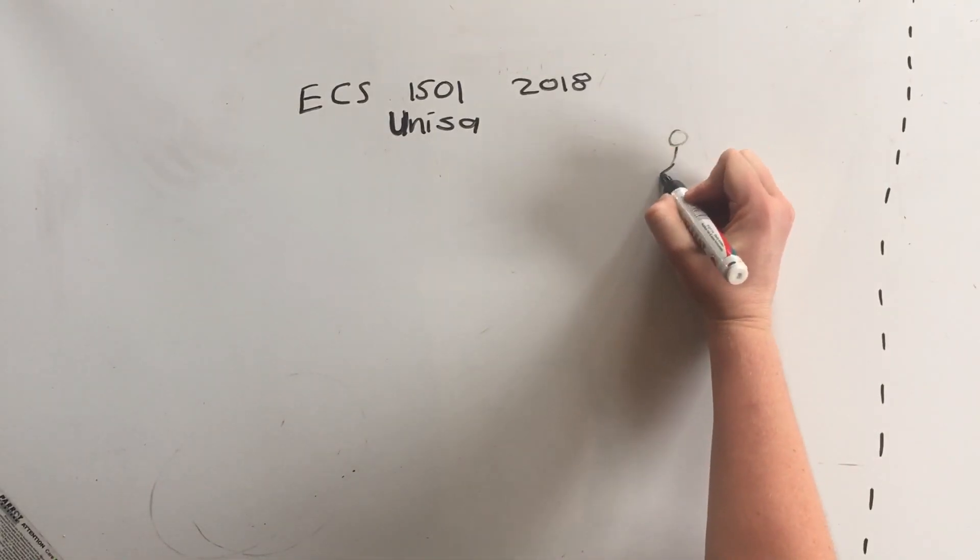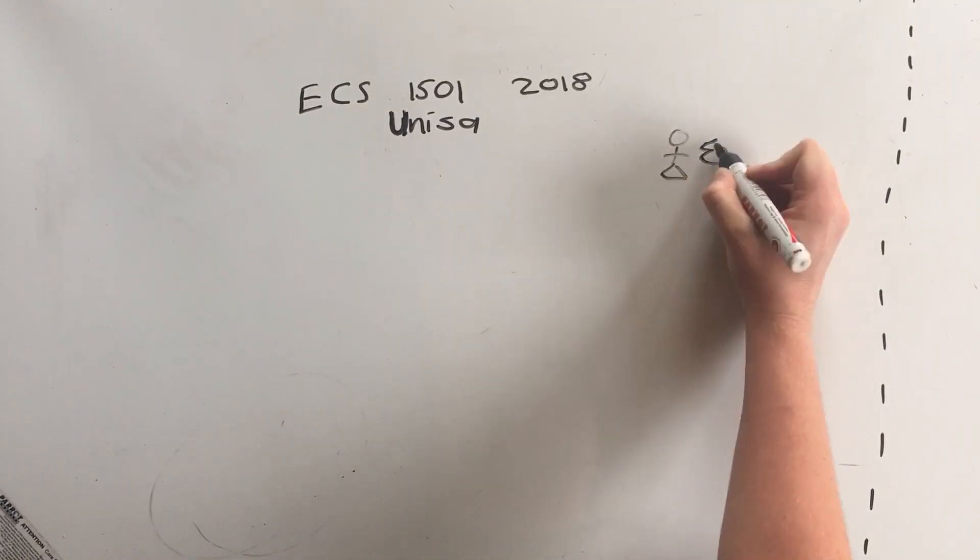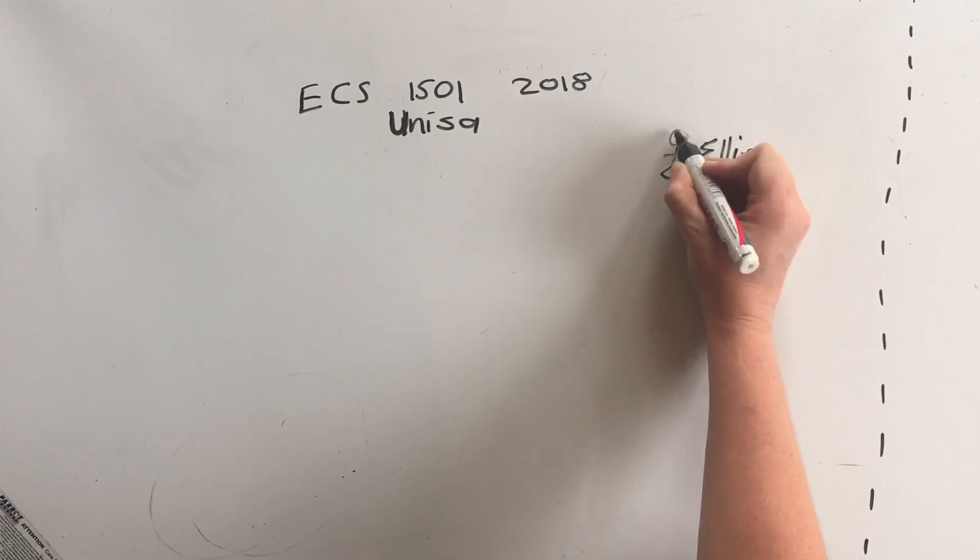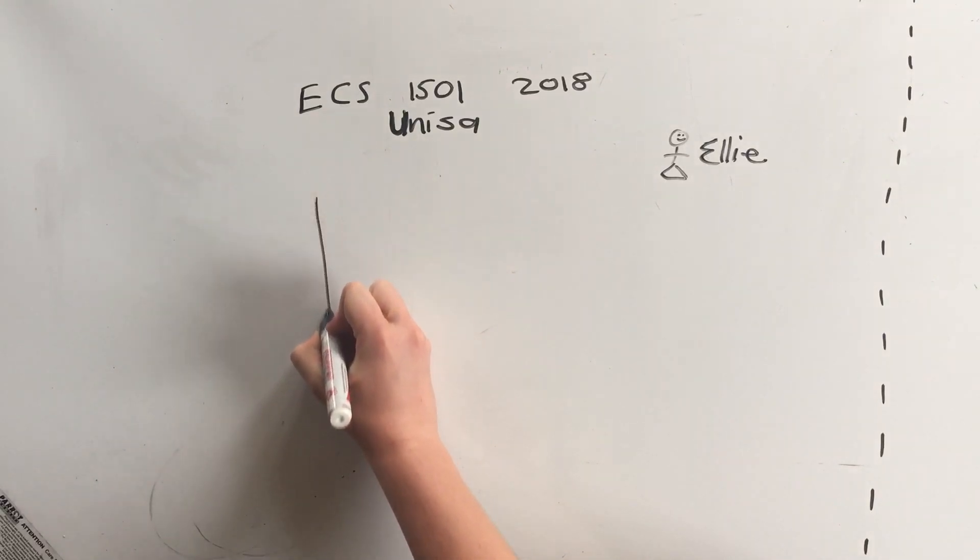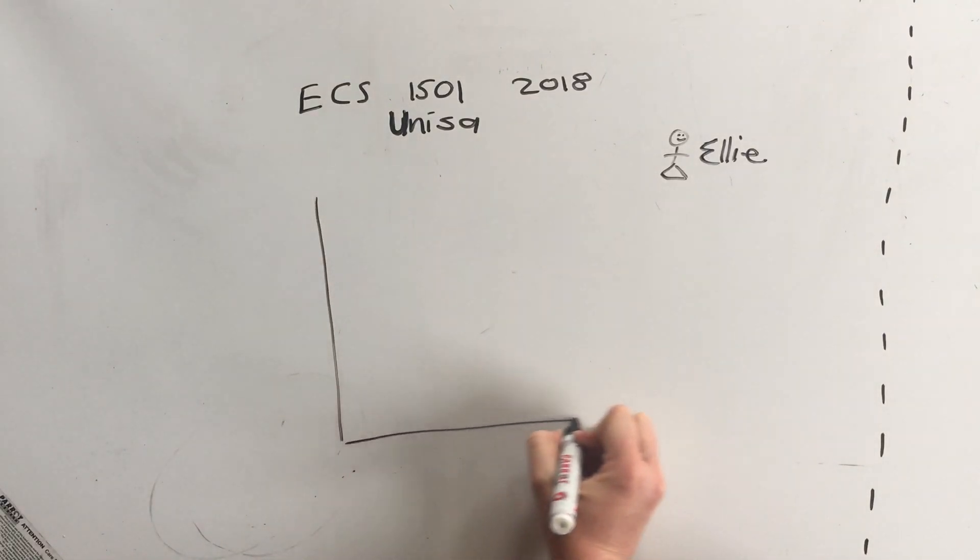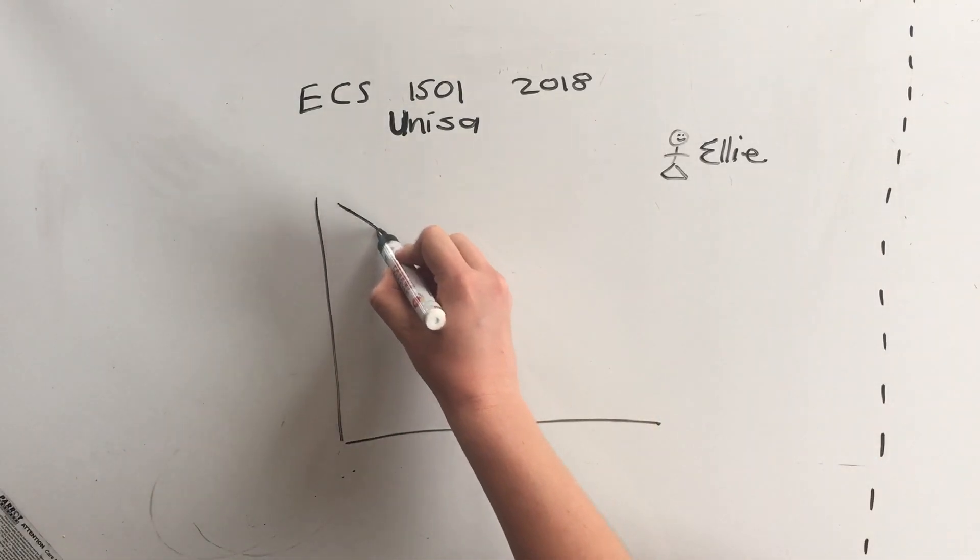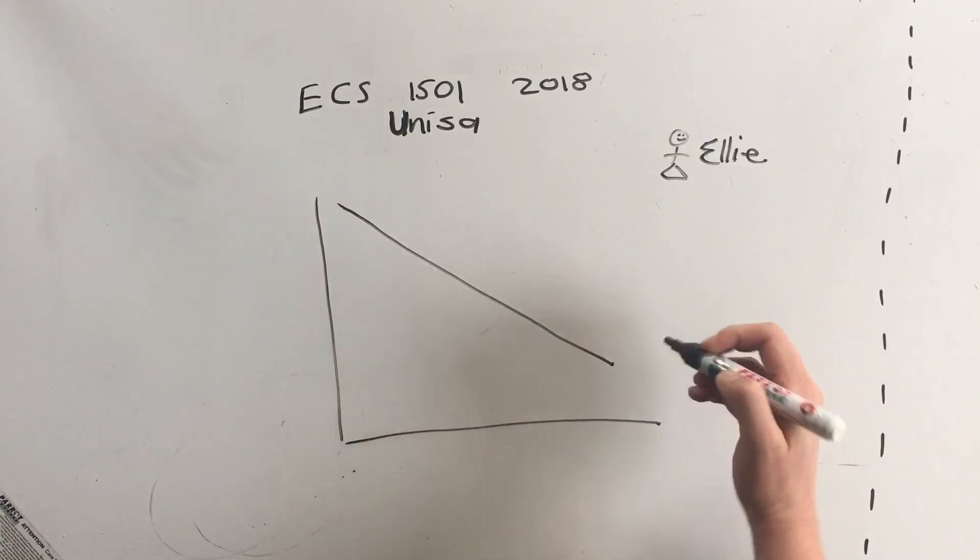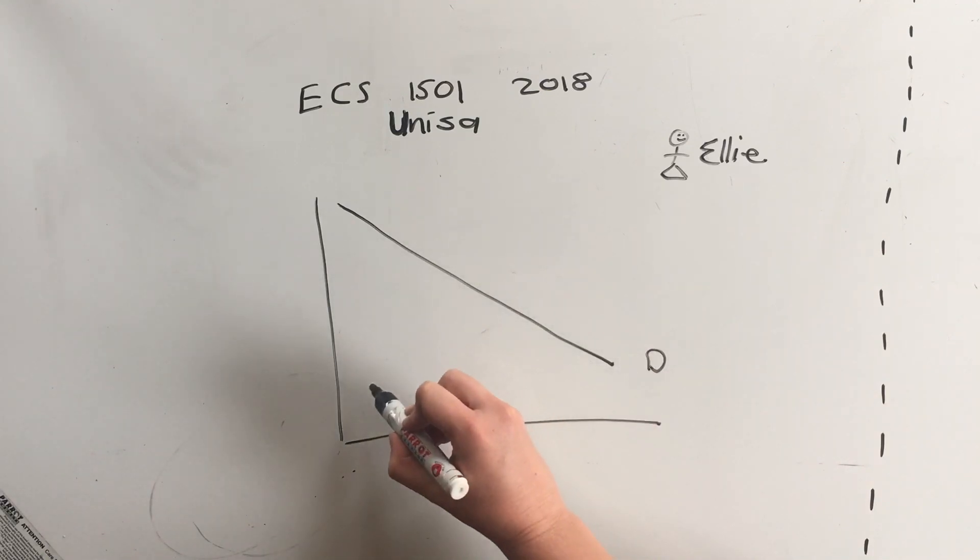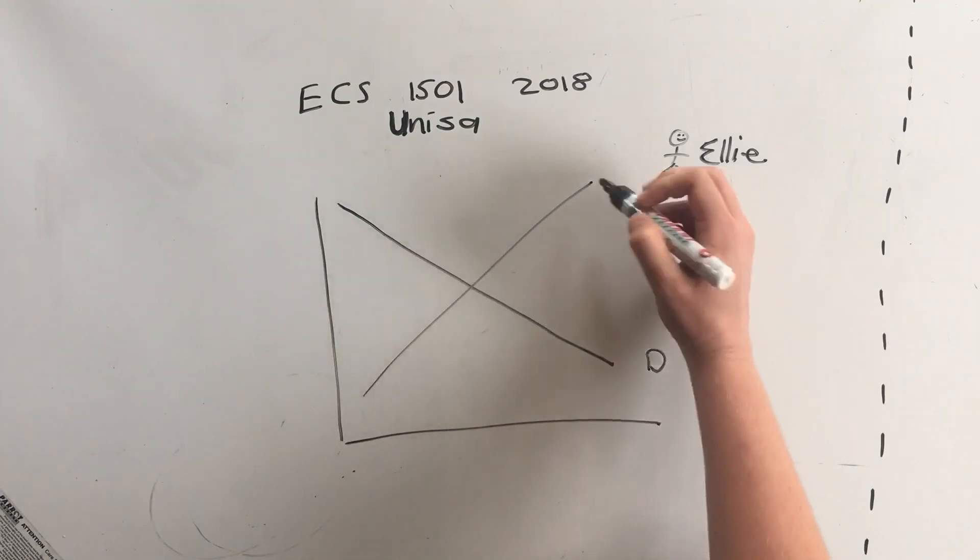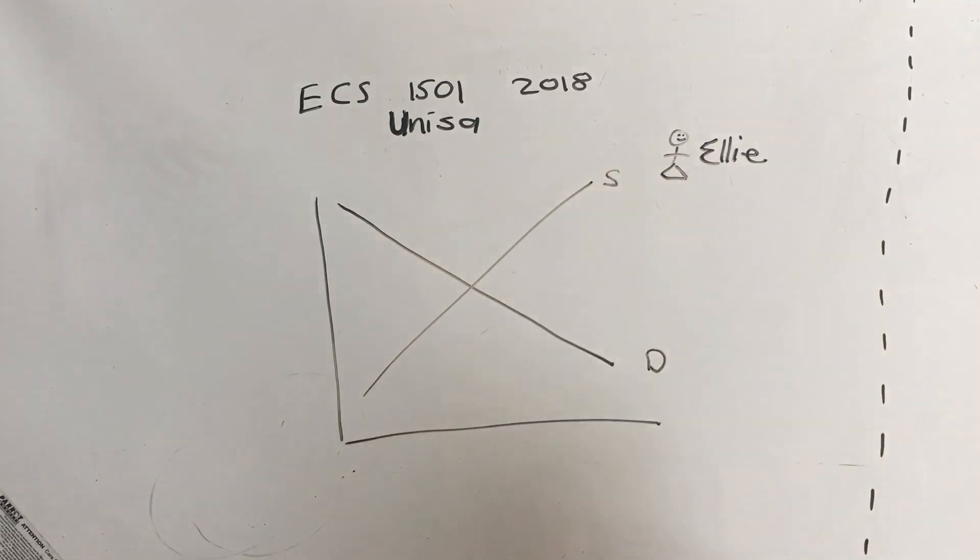Hello and welcome back to my second video. I'm Ellie and I'm going to help you pass Economics 1 through UNISA. In the first video we did our first graph which is supply and demand. It's very important to remember that the curve that runs this way is demand and the curve that runs this way is supply.